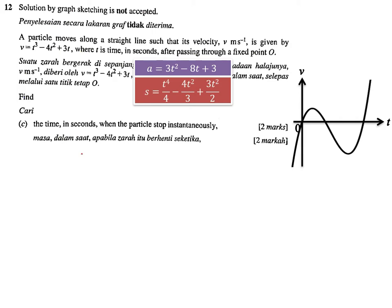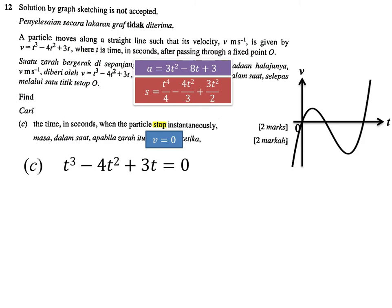Next part: find the time in seconds when the particle stops instantaneously. 'Instantaneously' means it stops only for that very short moment before moving again. The concept is stop, turn left, or turn right — the keyword tells you to set velocity equal to zero: t³ - 4t² + 3t = 0. Writing this equation earns one mark, showing you understand the concept of stopping.